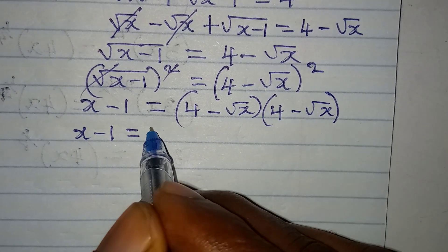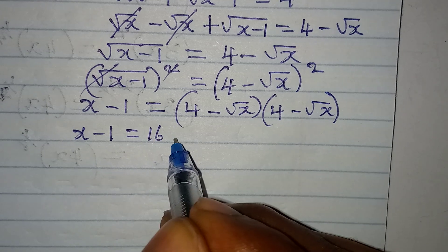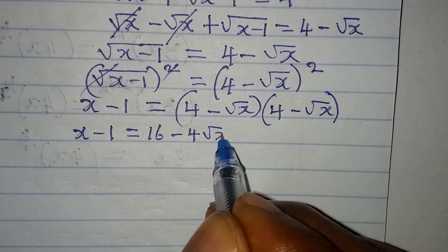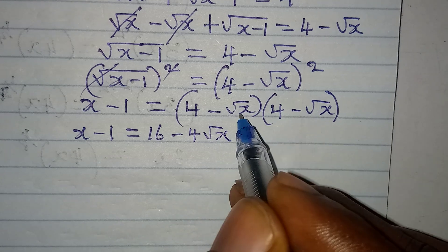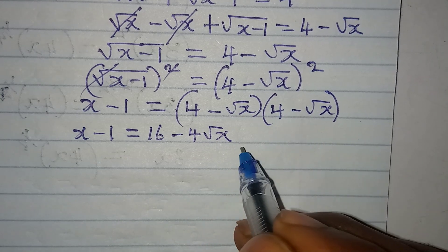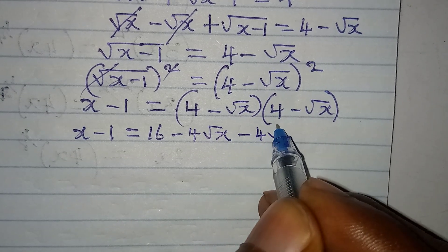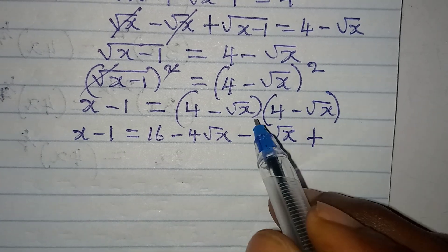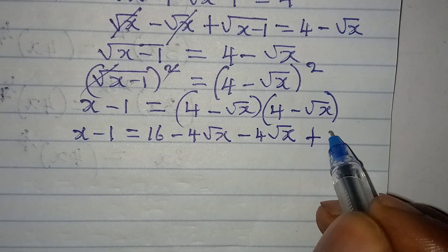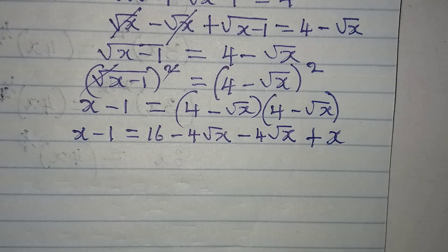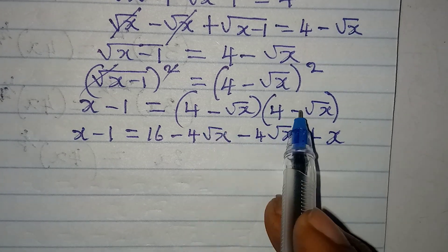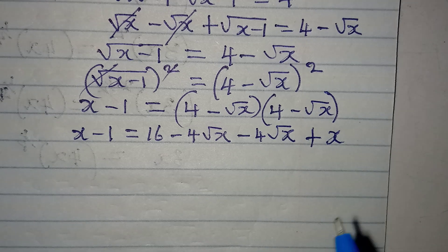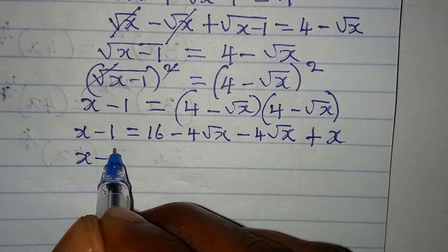Now let's expand the right side. x minus 1 equals 4 times 4, which is 16, then 4 times negative square root of x gives minus 4 root x, then negative root x times 4 gives another minus 4 root x, and negative root x times negative root x gives positive x.